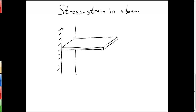In this video we're going to look at stress and strain in a beam. Let's say we have a cantilever beam and we apply some force out on the end of the beam. We want to know how the beam reacted to this force — how much it deflected, what kinds of stresses and strains occur at any particular point, or what the reaction at the wall is because of this force.